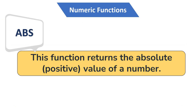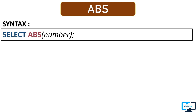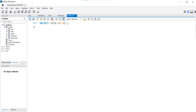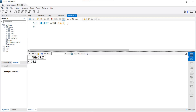Our first function is ABS (absolute). This function returns the absolute or positive value of a specific number — we just have to pass the number as a parameter. For example, let's find the absolute value of minus 35.6. After executing the query, you can see in the output we have the positive value of the given number. Using the absolute function you can get the positive value of any number.